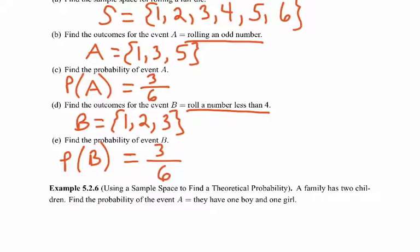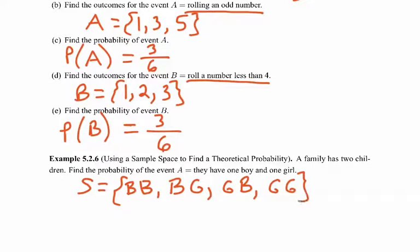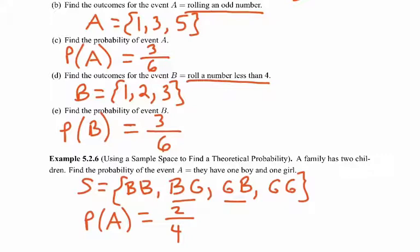A family has 2 children. Find the probability of event A that they have 1 boy and 1 girl. The sample space is: boy-boy, boy-girl, girl-boy, or girl-girl. The probability that they have 1 boy and 1 girl: the number of ways this could occur — boy-girl or girl-boy — is 2 out of a total of 4 possibilities. So it's a 50% chance, or one-half.